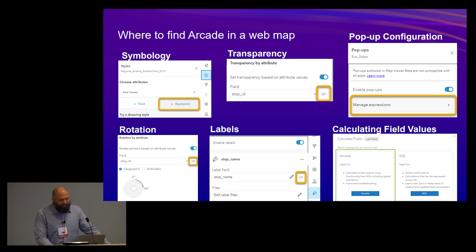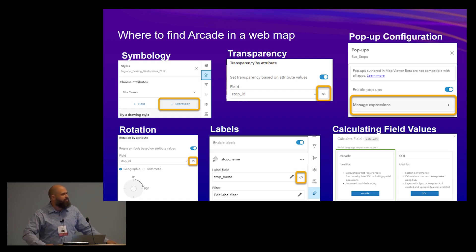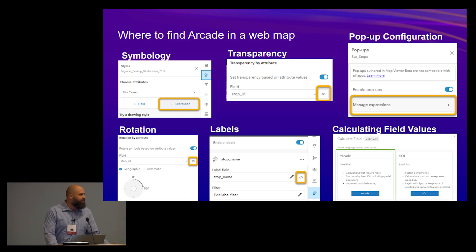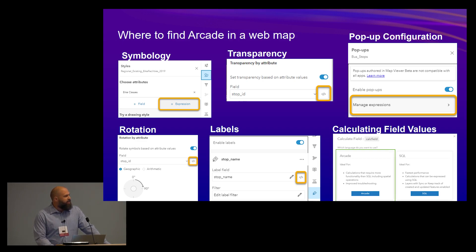Now, where to find it? You're going to be looking for two things. It's going to be either 'expressions' or 'manage your expressions,' or it's going to present as the little bracket with the slash. You're going to see it present those two ways throughout. As you can see, it's pretty much everywhere — you can work with your pop-ups, you can work with your symbology, you can do your field values.